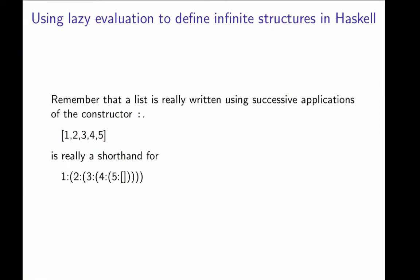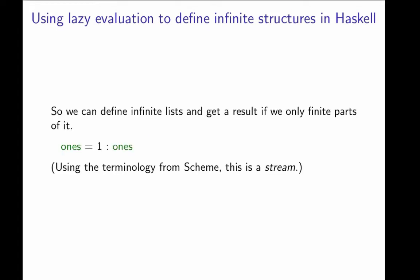One of the very nice and compelling features of lazy evaluation is that it makes it possible for us to define infinite data structures in Haskell. To see why this is the case, remember that a list is really written using successive applications of the cons constructor, this little fellow. So if we write the list of 1, 2, 3, 4, and 5, it's really just a shorthand for 1 cons onto 2 cons onto 3 cons onto 4 cons onto 5, that's then cons onto the empty list.